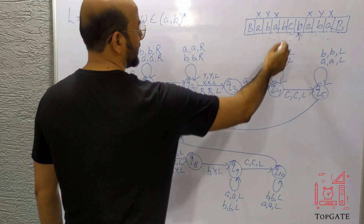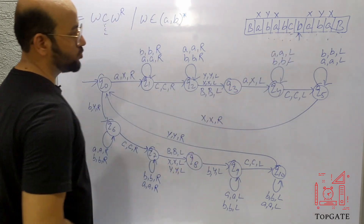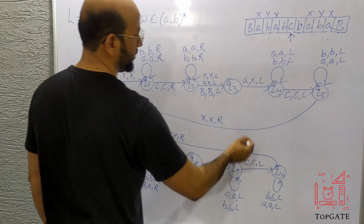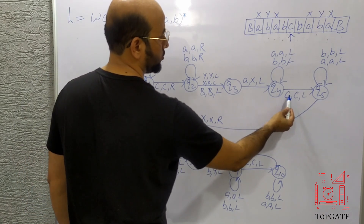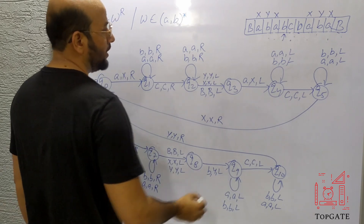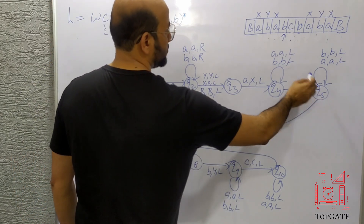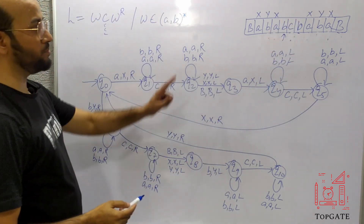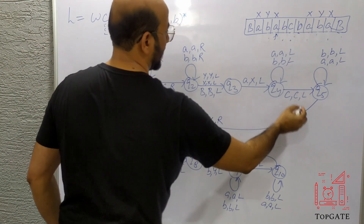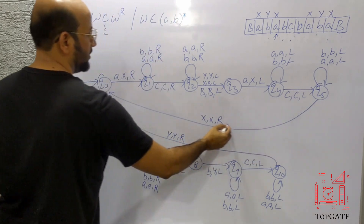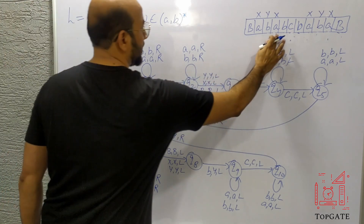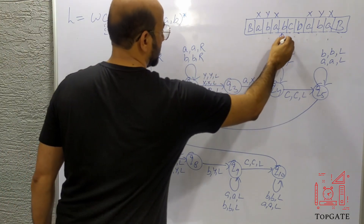At Q4, the machine knows every B and every A has to be skipped. This A and this B are skipped and the pointer comes to C. At Q4, C is also skipped and the pointer comes to B. At Q5, this B is also skipped and the pointer comes to X. From Q5, the machine takes X, X, R and returns to state Q0, with the pointer on the next element B.